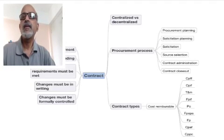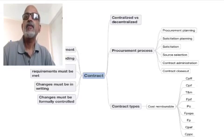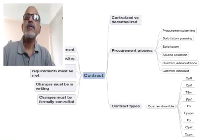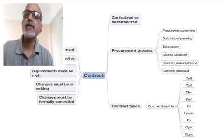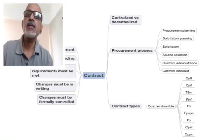Hello. In this mind map discussion, we will be talking about contracts. Upon completion of this discussion, you must be very clear about the legal aspects of a contract, the different types of contracts, and its impact on the suppliers as well as customers.